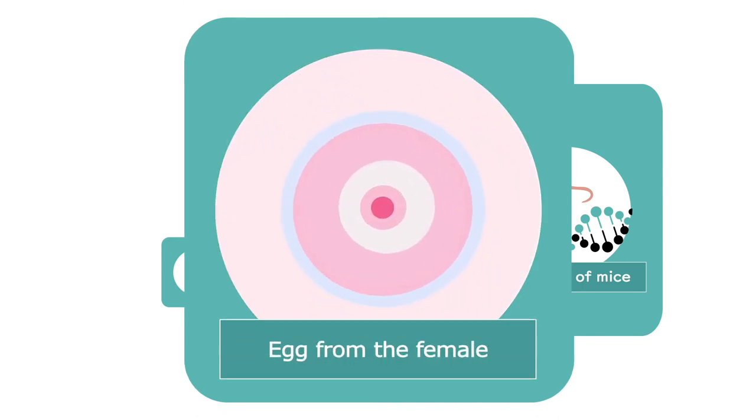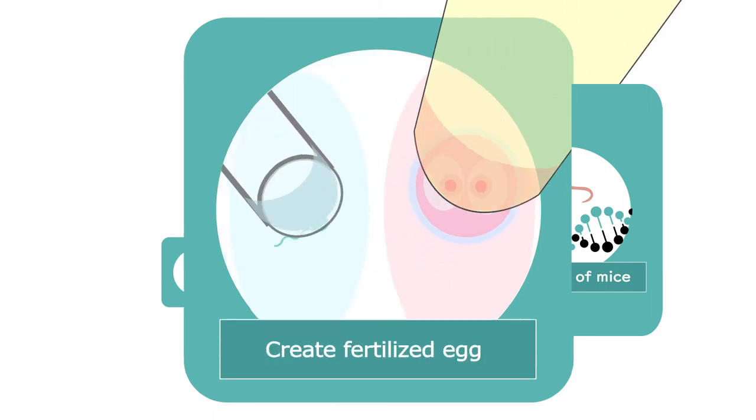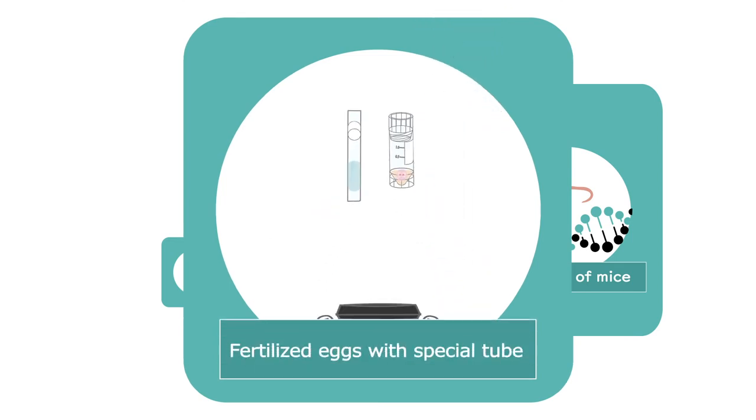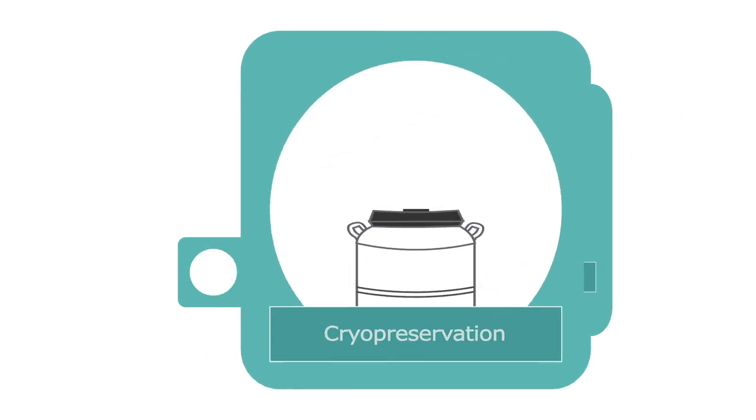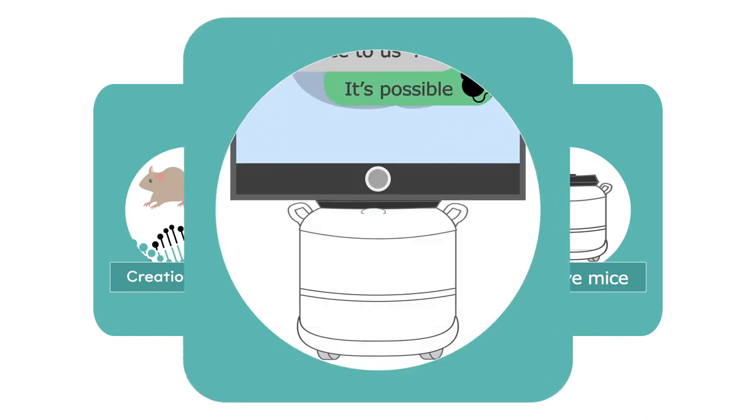To create fertilized eggs through in vitro fertilization. After that, we freeze the sperm with special straws and the fertilized eggs with special tubes for long-term preservation. The third is the supply of mice.